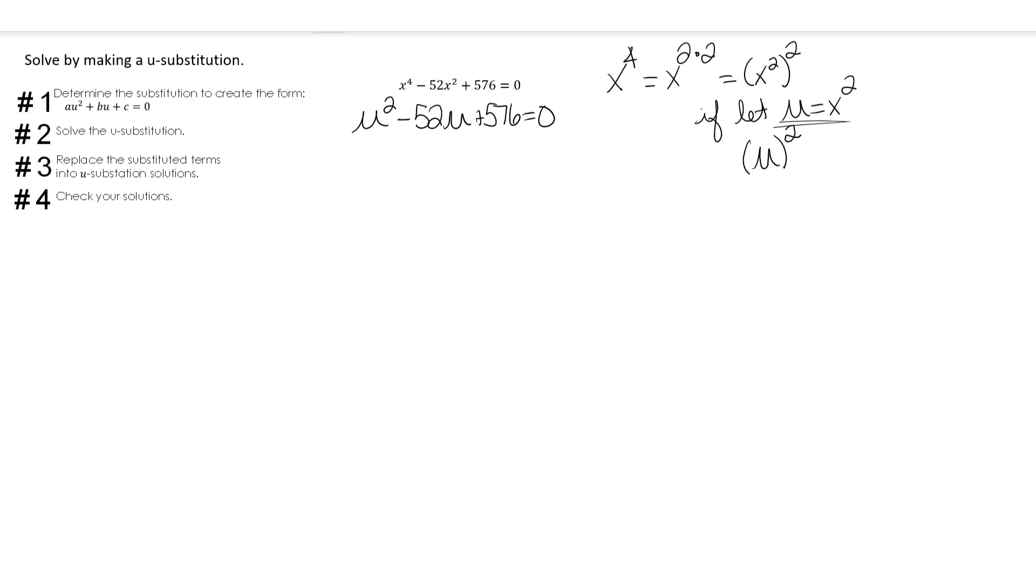Now we need to factor it. So we need to think of numbers that multiply to 576 but also add to negative 52. Well, in this case, we're going to have negative 16 times negative 36, because negative 16 plus negative 36 is our negative 52. And these happen to be our magic numbers.